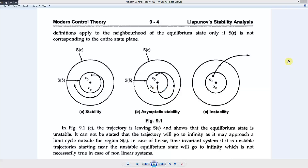Now we will see a very important topic regarding stability of a control system. We will discuss stability in terms of the Lyapunov sense. To explain it in a very simple way, we will take the help of these three graphs.